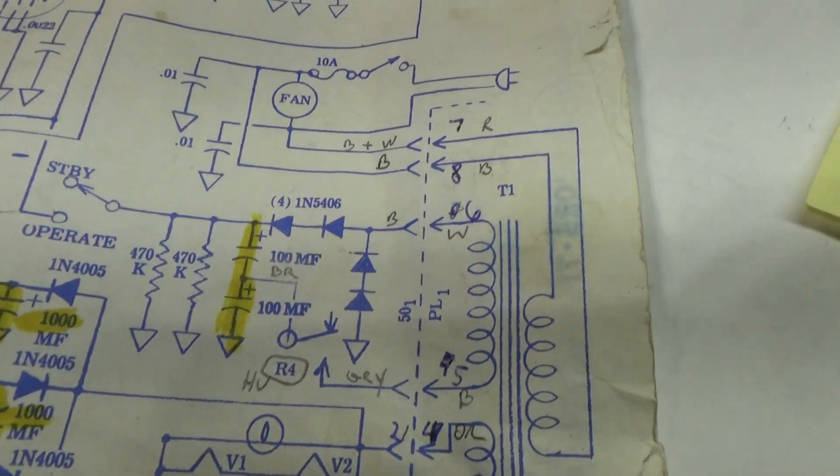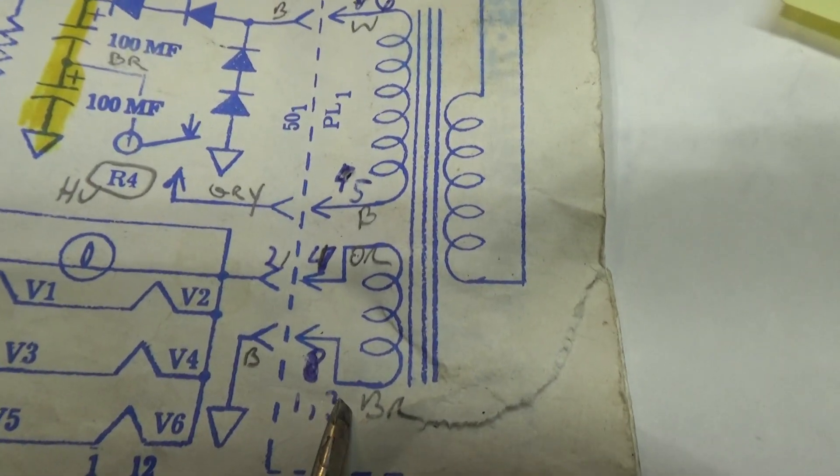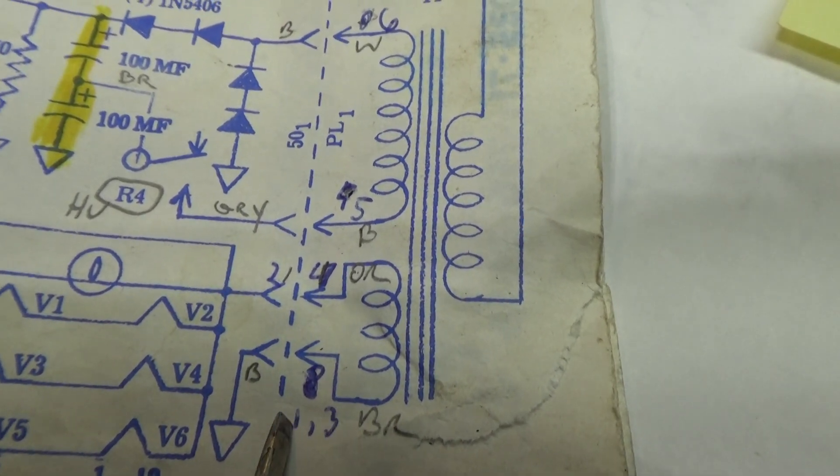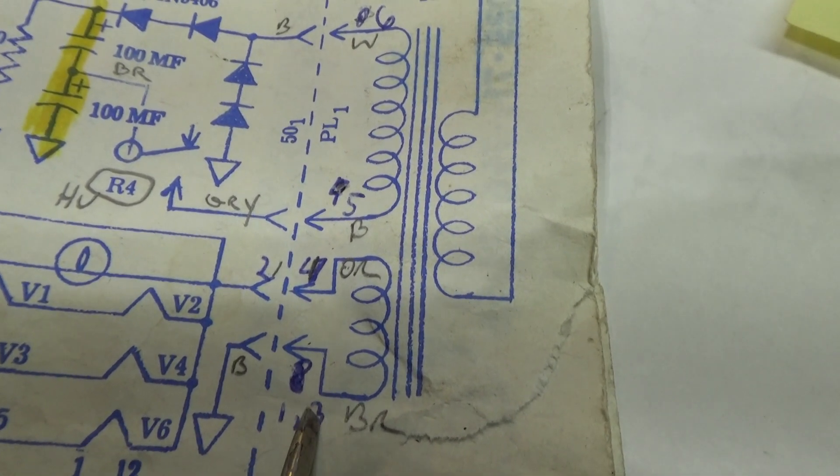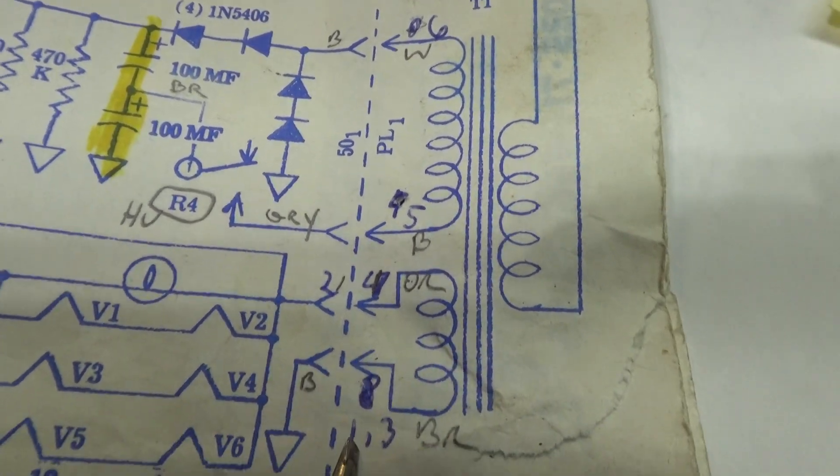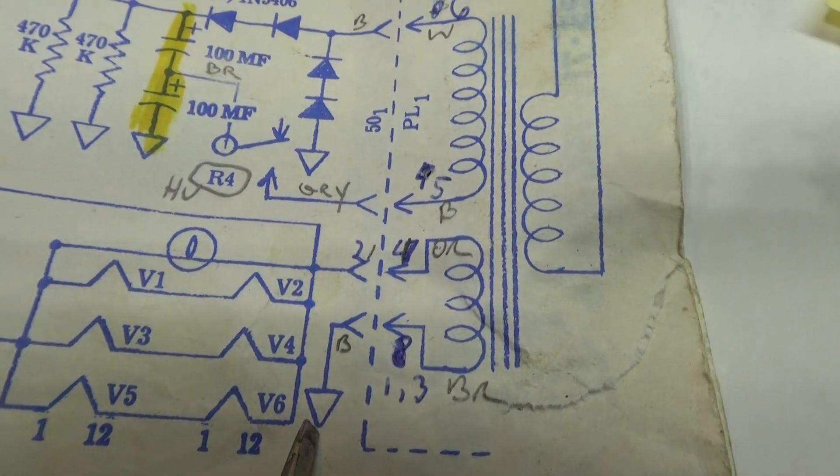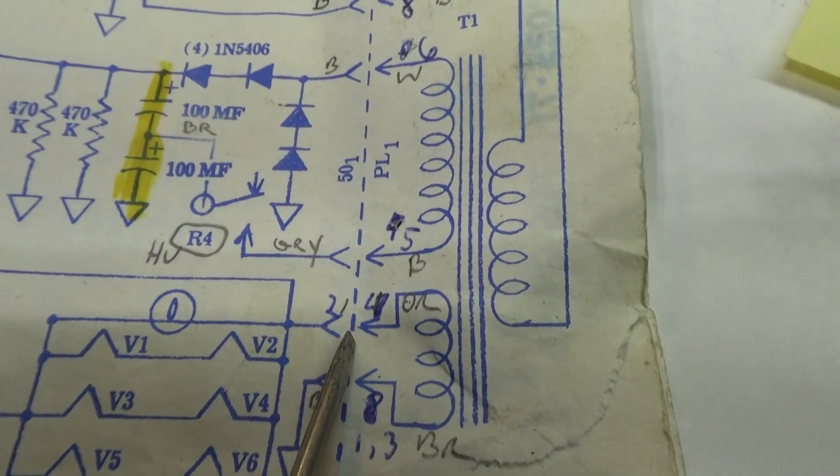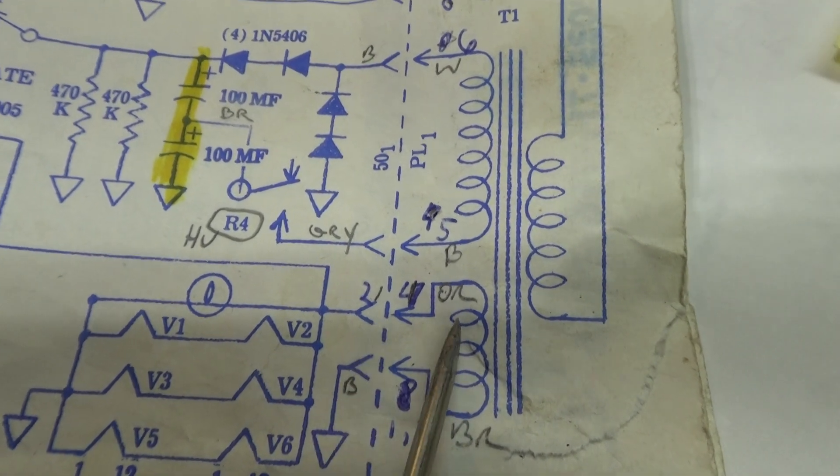And let me see if I can get a pointer. Starting down here at the bottom is pins one and three, and then going up is pin two and four. That's actually ground for pins one and three.